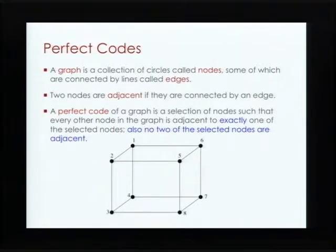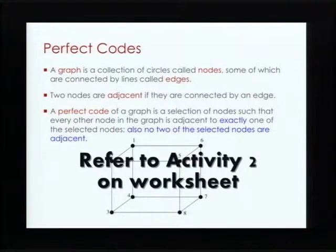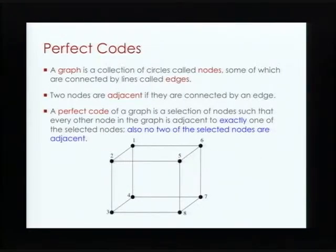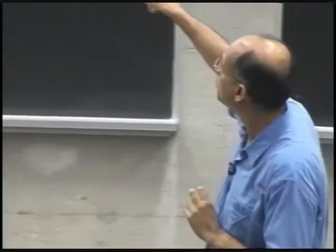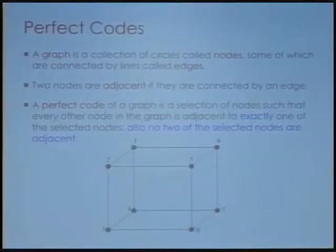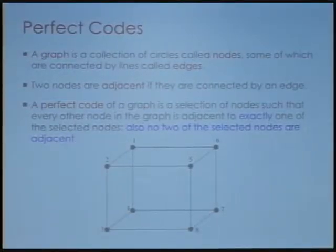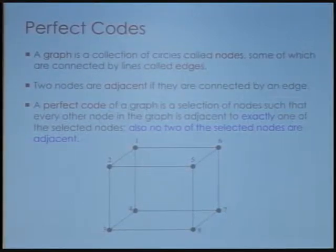Let me tell you what a perfect code is first. So first, a graph — not the graphs you draw on the x, y axis, it's a different notion. A graph consists of a bunch of circles, in this case black circles, some of them joined by lines and some not. Two nodes, as I call them, are said to be adjacent to each other if they're joined by an edge. For example, the nodes 1 and 2 are adjacent, while the nodes 1 and 8 are not adjacent — they aren't joined by an edge.